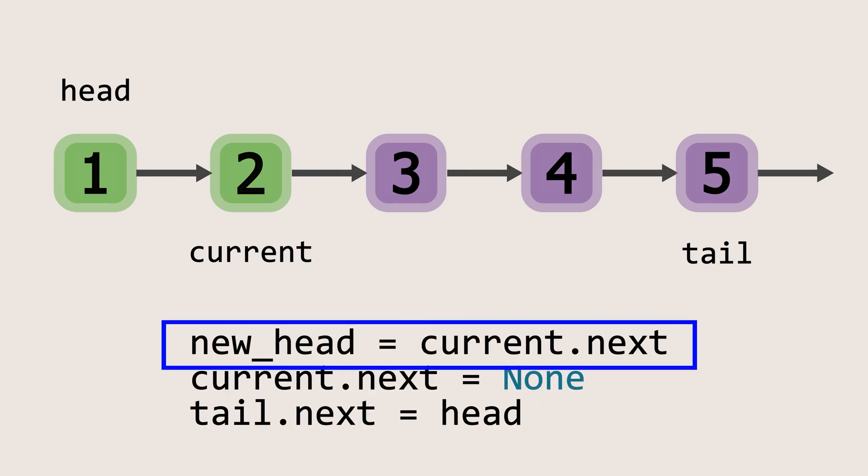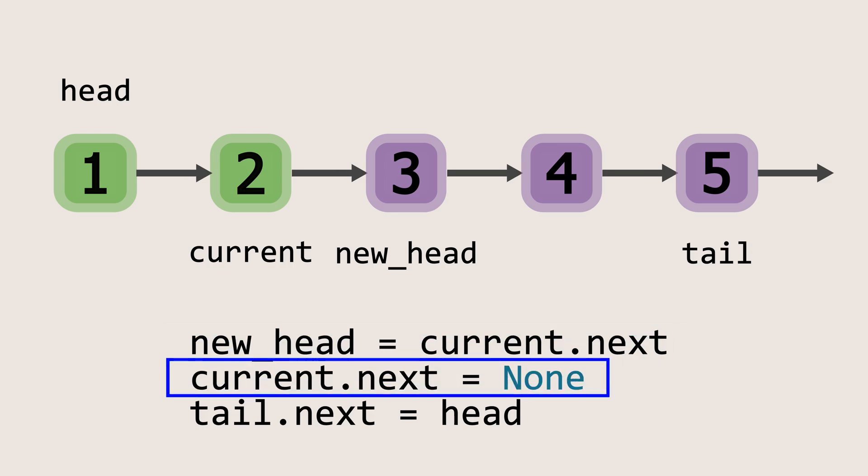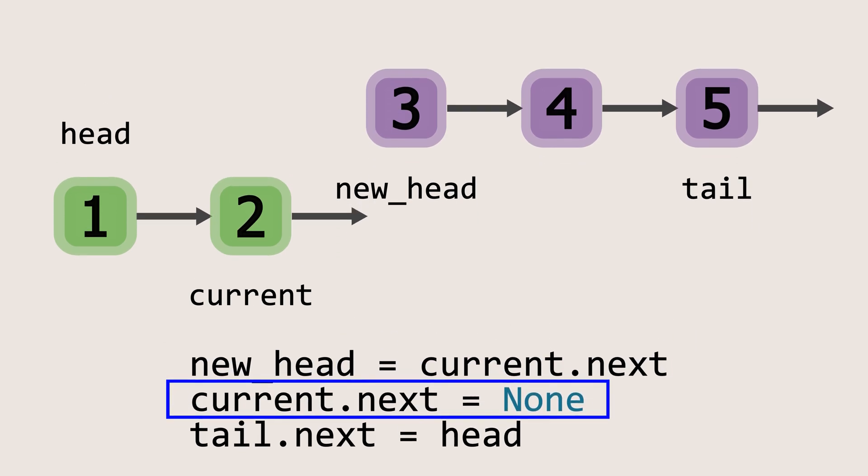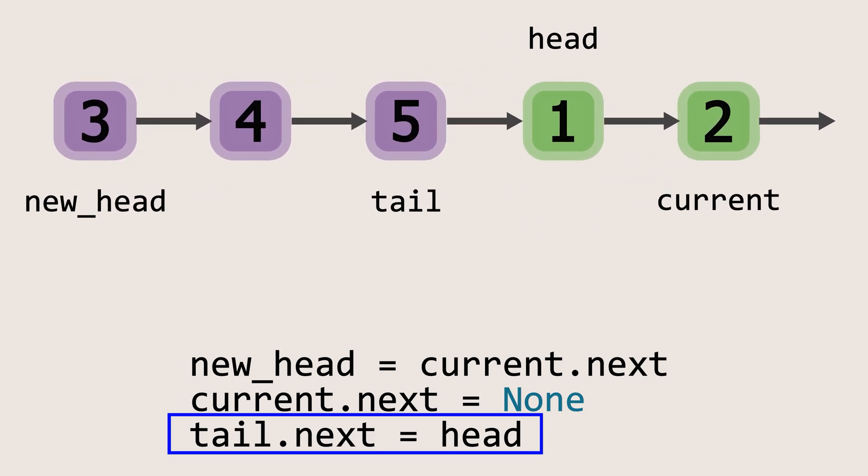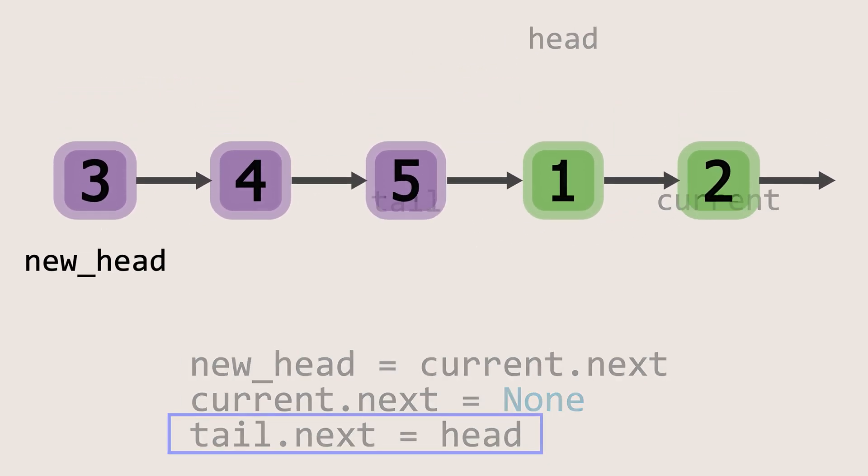Next we create a variable called new head and we'll set it to current.next. This will be the new head of the list after rotation. And then we set the current.next to none. This step is crucial as it disconnects the two parts of the list. And finally, we set the next pointer of the tail to point to the original head of the list. And with that, the rotation is complete.